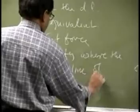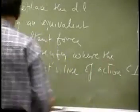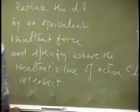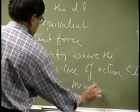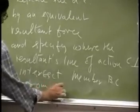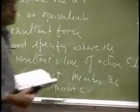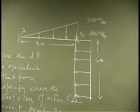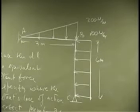The line of action will intersect member BC, starting from point C. We want to replace this whole distributed load with a single force and then determine exactly where that force's line of action will pass through the length BC.